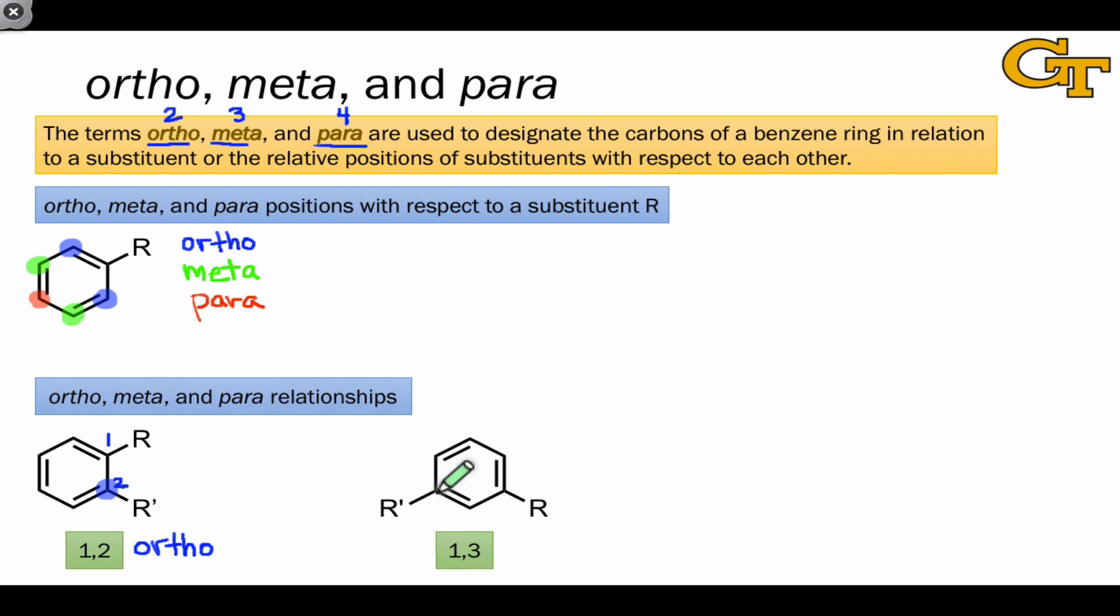In this second case, the carbon bearing R' is now at the three carbon relative to the carbon bearing the R group. This one-three relationship between R and R' is referred to as a meta relationship, and we say that the compound shown is a meta disubstituted benzene. Finally, in this last case, we find that the carbon bearing R' is located at the four position relative to the carbon bearing R. This is a para relationship between the substituents R and R', and we say that this molecule is a para disubstituted benzene.